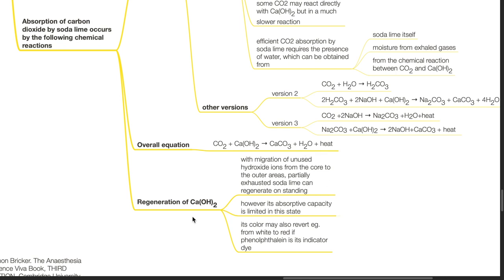Regeneration of calcium hydroxide. With migration of unused hydroxide ions from the core to the outer areas, partially exhausted soda lime can regenerate on standing. However its absorptive capacity is limited in this state. Its colour may also revert, for example from white to red if phenolphthalein is its indicator dye.